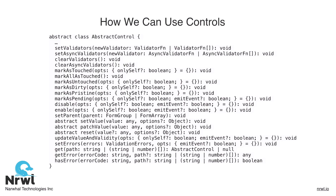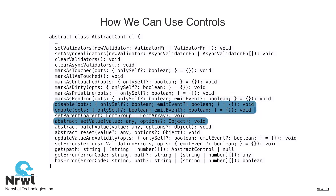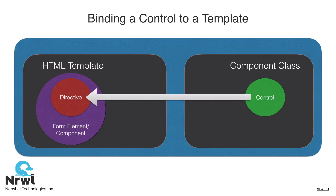Moving along in the API, on screen we have all the methods available to an abstract control. Take note of the setValue method — this is what we'll use to programmatically change the value of a control, since the value property is purposely read-only by design. Also note the enable and disable methods. We'll use these in the upcoming lessons to enable or disable input elements programmatically.